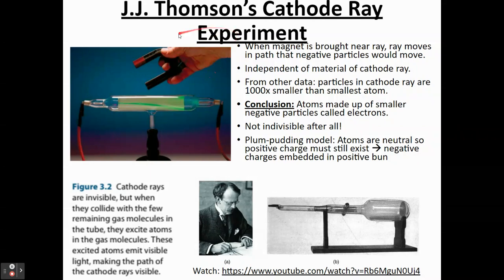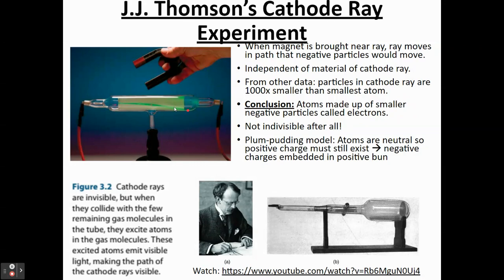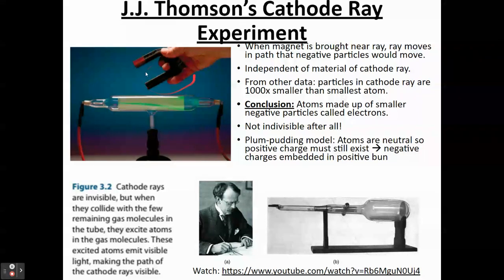Thomson used something called a cathode ray tube. You can see a beam of particles going through the cathode ray tube, and they're much smaller than the atom. He brought a magnet close to the beam of particles and the beam was deflected, indicating these particles had a negative charge based on how they interacted with the magnetic field. That means there were particles smaller than the atom that were negative — the atom has some negative particles in it — which means the atom is not indivisible like Dalton thought after all.